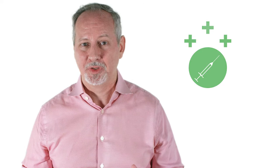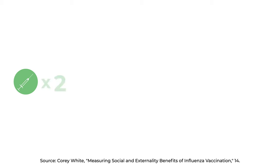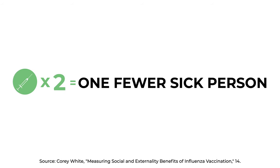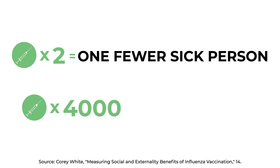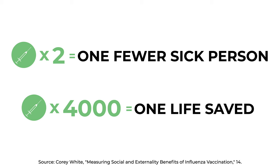A flu shot is a great example of a good with a positive externality. When I get a shot, I benefit myself, but I also benefit other people because I'm less likely to transmit the virus. In fact, the economist Corey White has estimated that every two flu vaccinations saves someone else from getting sick and having to miss a day of work, and every 4,000 vaccinations saves a life.